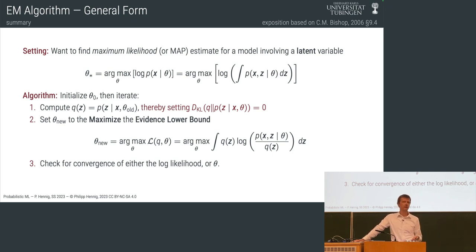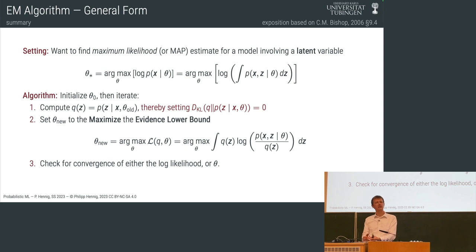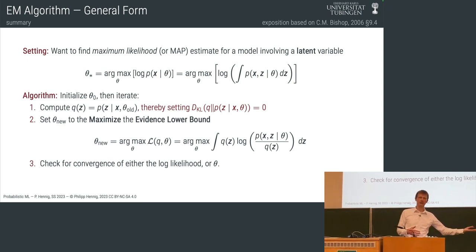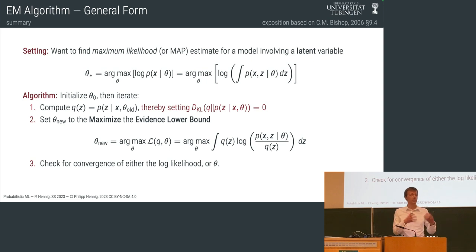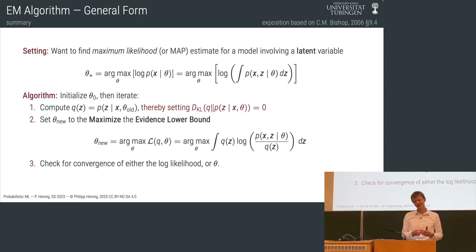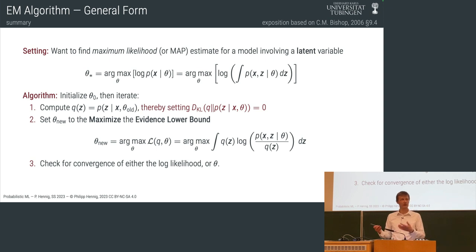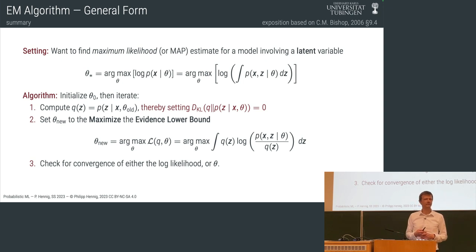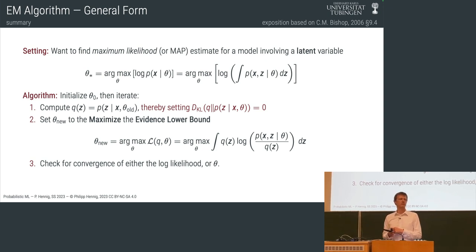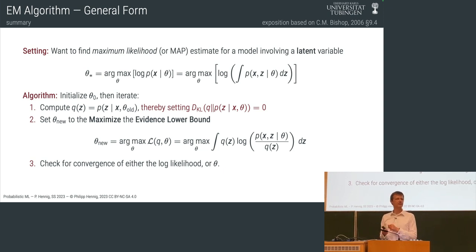Ideally we would like to do full Bayesian inference. We marginalize out the variables that are part of the inference, and that yields a likelihood — the evidence in the normalization constant of Bayes' theorem — which we can treat as a likelihood for the model or for the parameters. But that usually involves intractable integrals, so instead we need some other procedure for optimizing these parameters. One simple thing is to construct a Laplace approximation in parameter space, allowing us to optimize parameters on an approximation to the model likelihood.